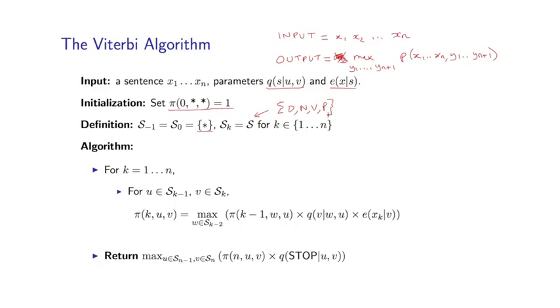The algorithm is going to proceed to fill in these pi values essentially left to right. So we go in order for k equals 1, 2, 3, right the way up to n. And at each point we apply this recursive definition.